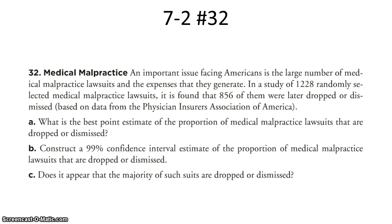Exercise number 32 from section 7.2 in your textbook reads: an important issue facing Americans is the large number of medical malpractice lawsuits and expenses that they generate. In a study of 1,228 randomly selected medical malpractice lawsuits, it is found that 856 of them were later dropped or dismissed. For part A, they ask what is the best point estimate of the proportion of medical malpractice lawsuits that are dropped or dismissed? The best point estimate for the population proportion is the sample proportion.